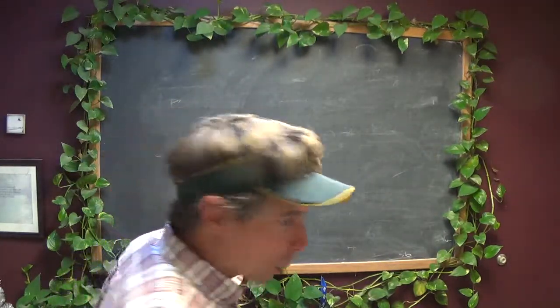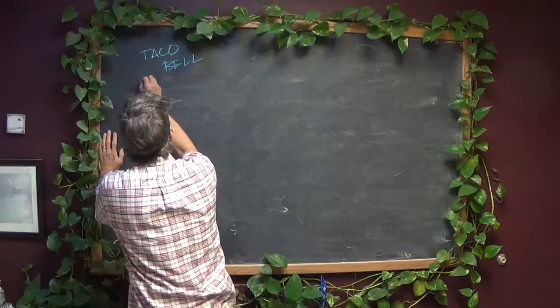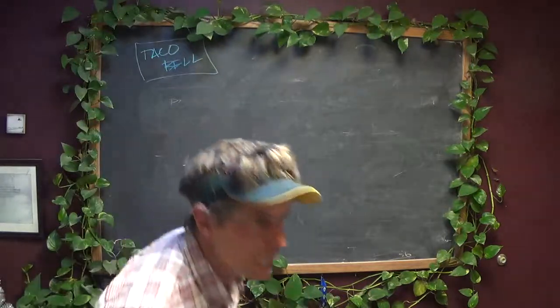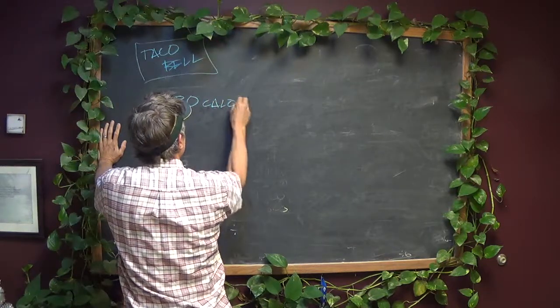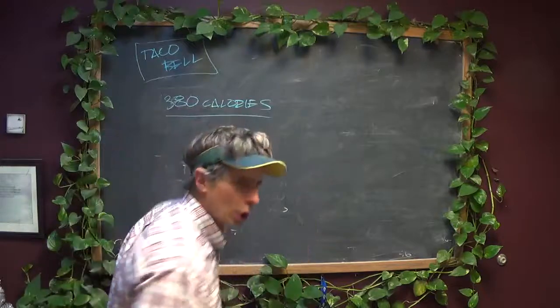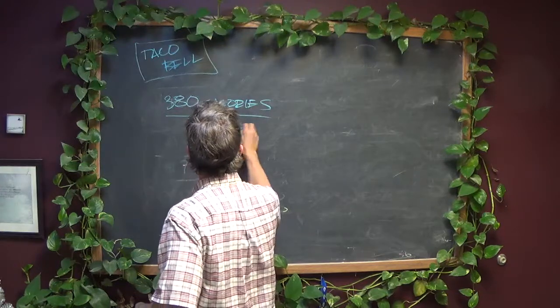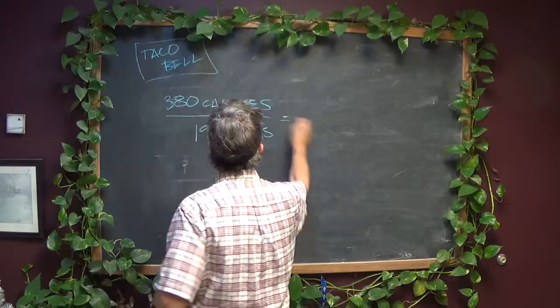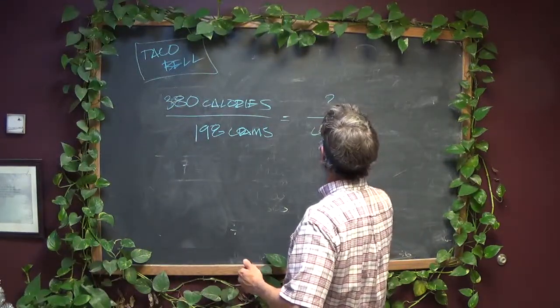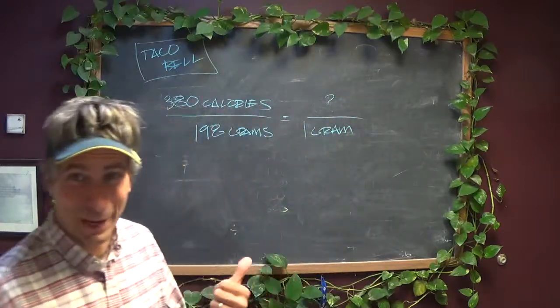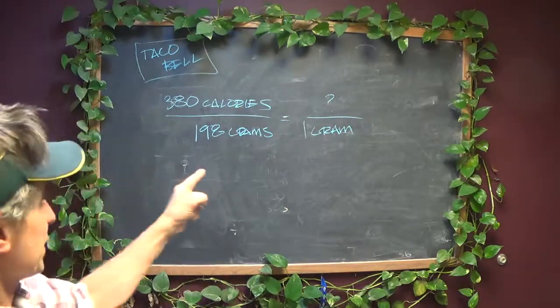The first one, Taco Bell. Taco Bell has 380 calories, but that's not per gram, that is per 198 grams. So I want to know how many calories it has per 1 gram.